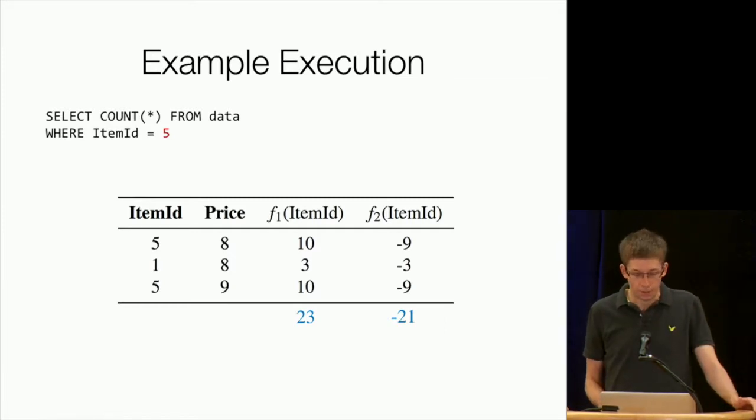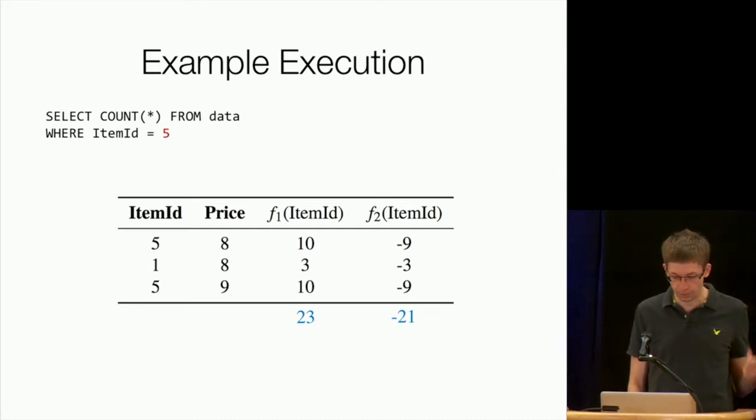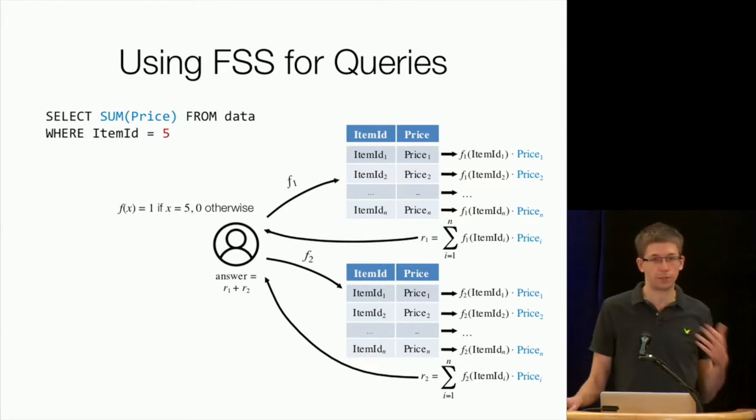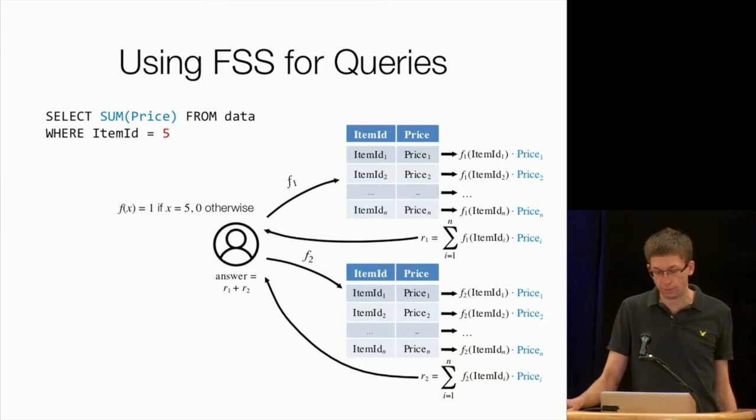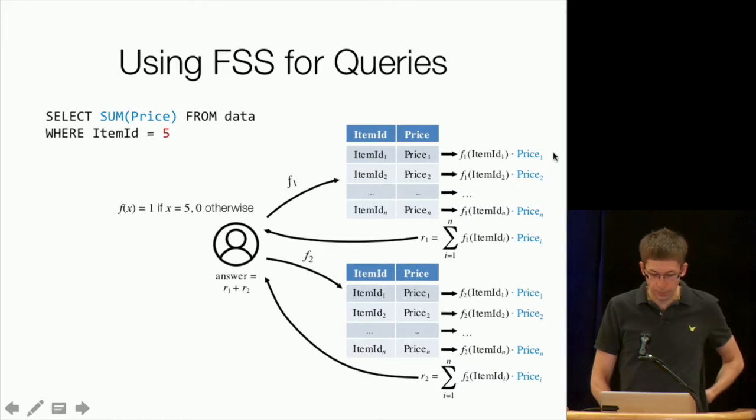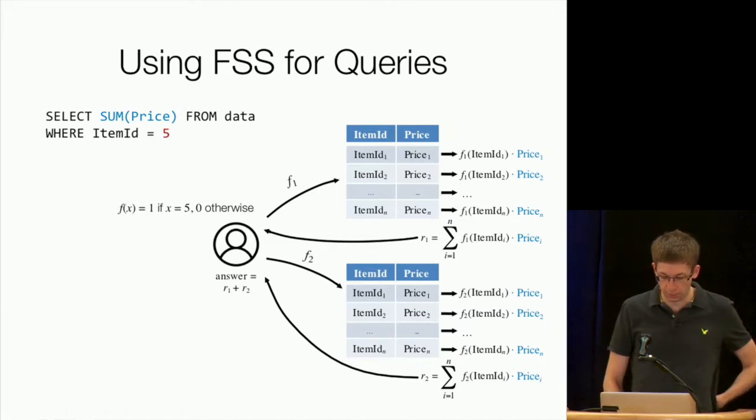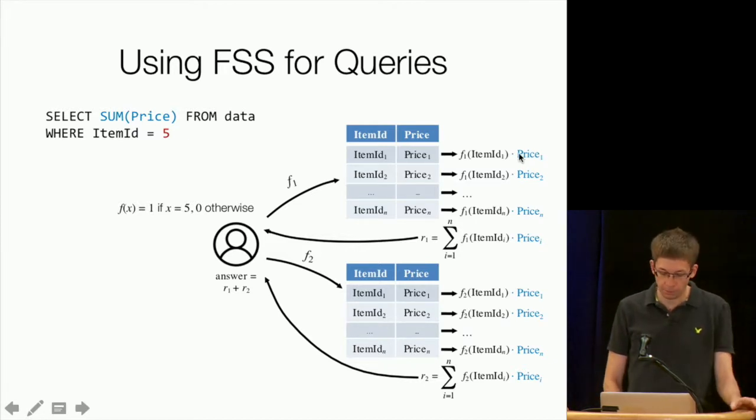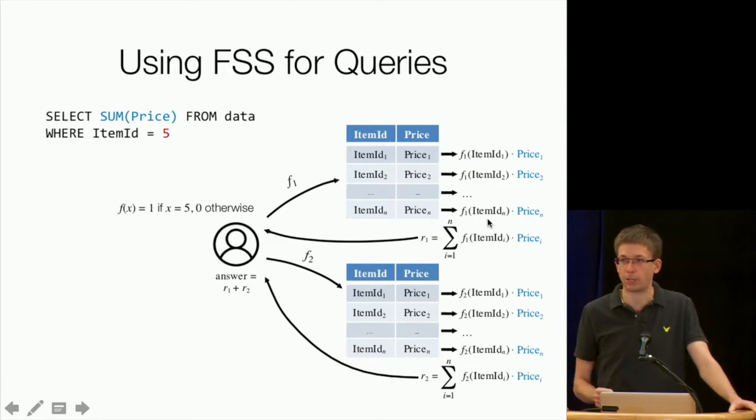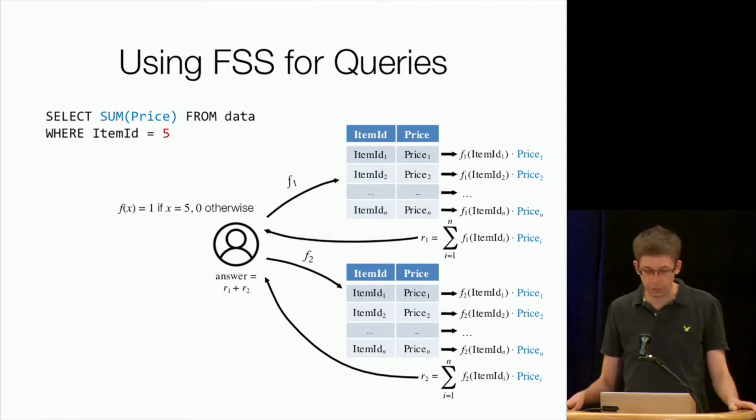Now the nice thing about FSS is we can also start using it for more complicated queries. And that's what we developed in Splinter to support these real applications. So as a next step of an example of a more complicated query, we're going to do a sum. So this is the same as before. Instead of counting the data where item ID equals five, we want to compute the sum of prices where item ID equals five. And to do that, we can just take what we were doing before, computing F on each item and multiply it by the price. So here we're going to get F of item ID one times price one, F of item ID two times price two and so on. And because these things are over a group, basically we can do these multiplications. And all the ones where F adds up to zero will just cancel out. And so we'll get back the prices just of the things that matched F without the servers having to know which ones those were. So that's again using the additivity of FSS, and we can get back the sum.